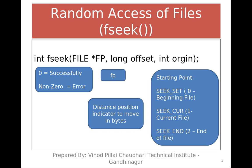If you want to jump 10 steps forward from the beginning, pass the third argument as zero. If you want to jump 10 steps forward from where you are currently standing, put origin as one. If you want to jump backwards from the end, specify two. So origin can be zero, one, and two — zero for beginning, one for current location, and two for end of the file.